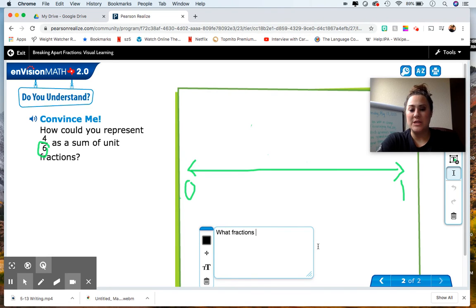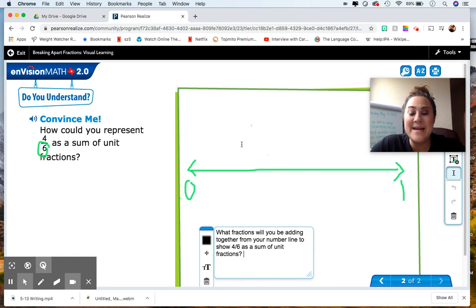So again, what fractions will you be adding together from your number line to show four-sixths as a sum of unit fractions? First, you have to identify what the unit fraction is. We know that the denominator is six, and what will always be the numerator? One.